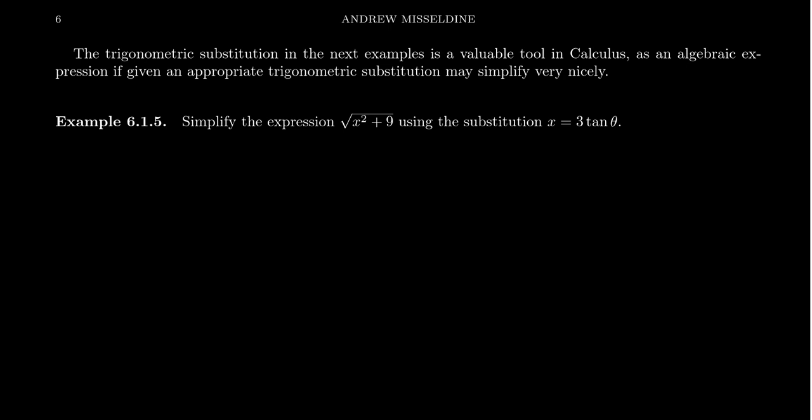So these trigonometric substitutions look like the following. You're going to take a square root of a sum of squares or a difference of squares. In this example, we're going to take the square root of x squared plus 9, and we're going to use the substitution that x equals 3 tangent theta.